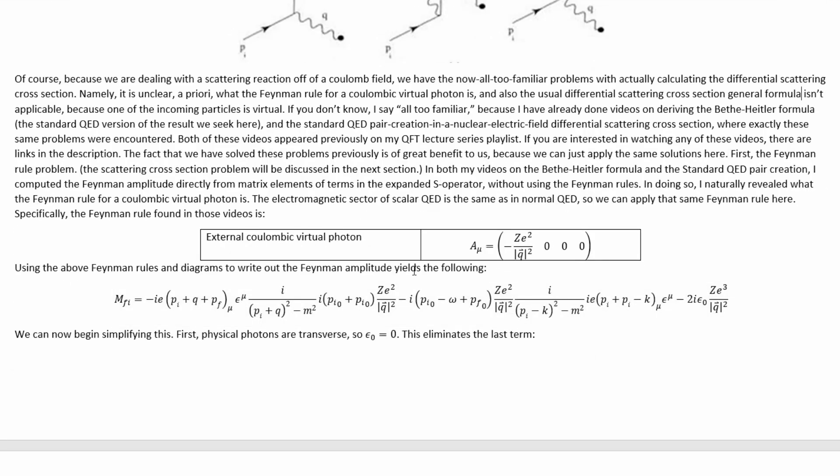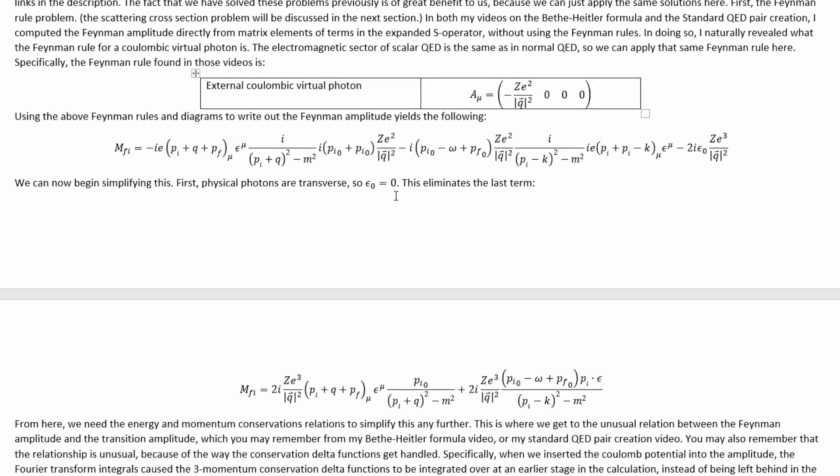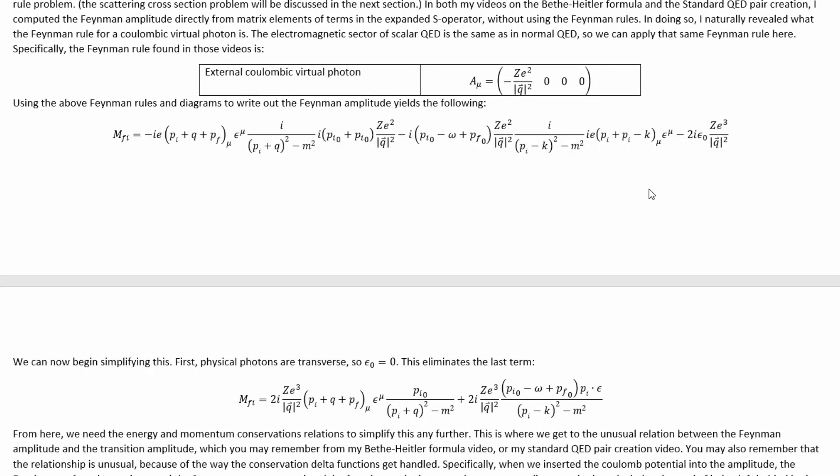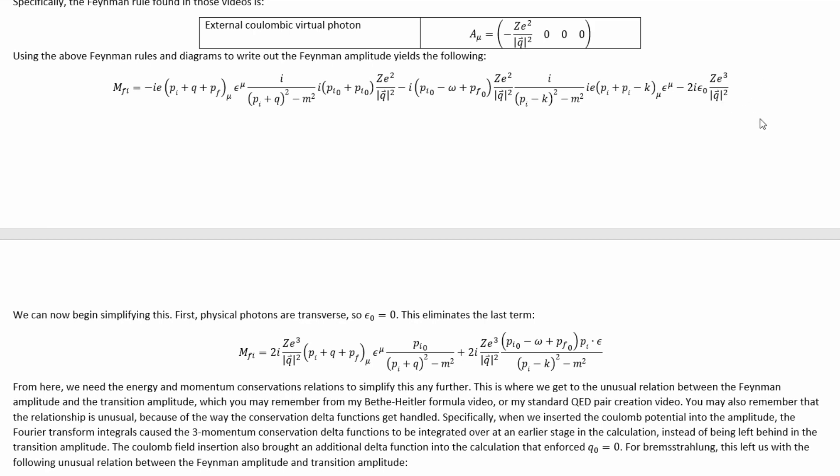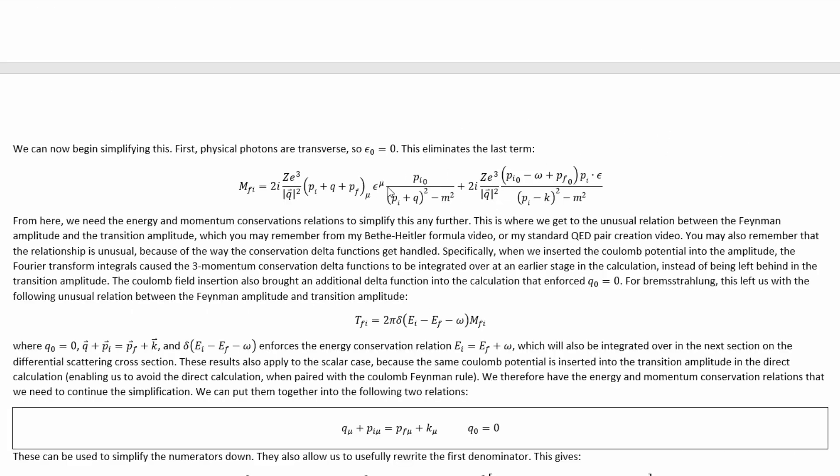Using the above Feynman rules and diagrams, including this one, as needed to write out the Feynman amplitude immediately gives us this. We can then simplify this a little bit using obvious algebra and also the transversality of photons, which means that epsilon_0 is zero, and also that the dot product between this epsilon here and that k there is zero, which eliminates that last term there and also this bit of this term. That ultimately leaves us with this.